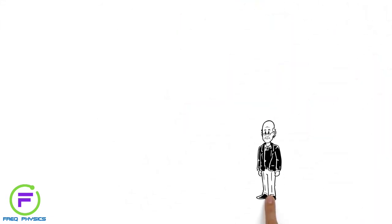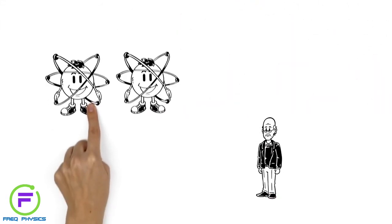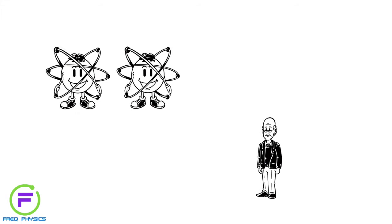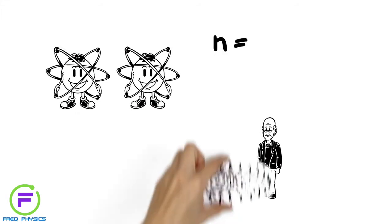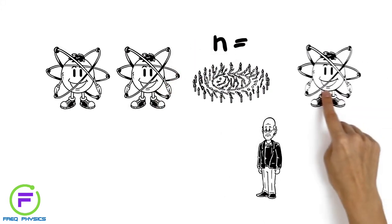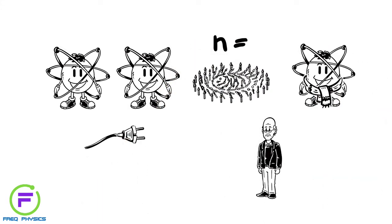Finally, Haldane studied one-dimensional chains of atomic magnets. He found another example of topological order. A different type of topological object, called a soliton, explained the change from conducting to insulating behavior of the chain.